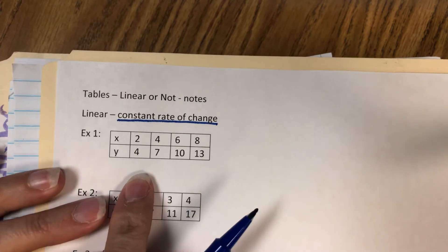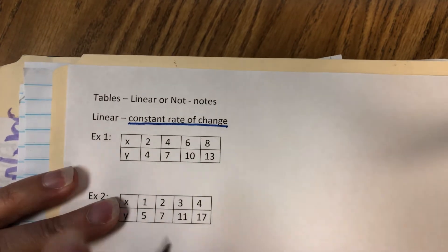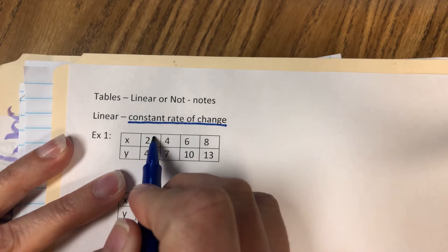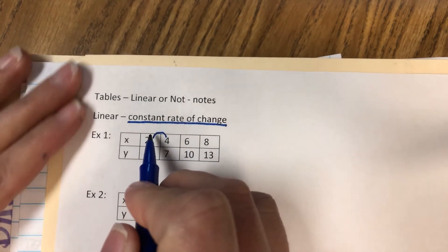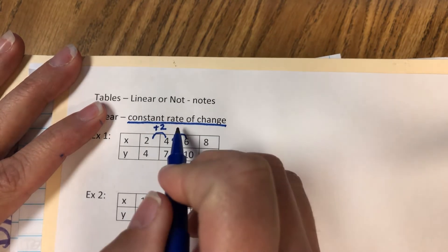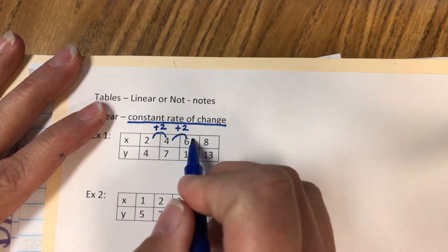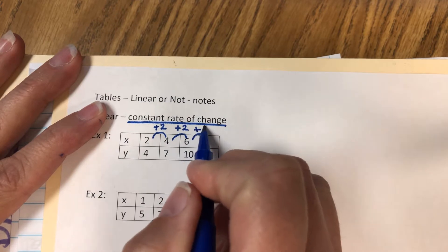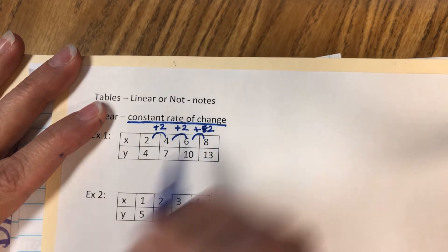Let's look at example one. Let's look at our x's to start with. The x's go from 2 to 4—what do you do to 2 to get to 4? You add 2. What do you do to 4 to get to 6? You add 2. What do you do to 6 to get to 8? You add 2.